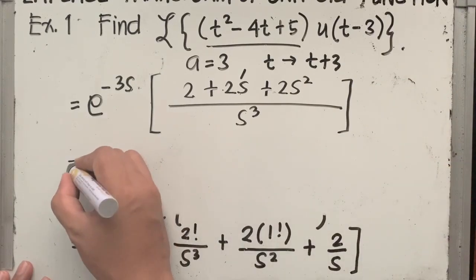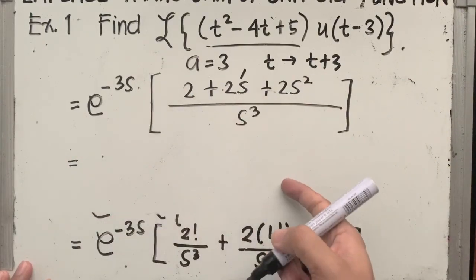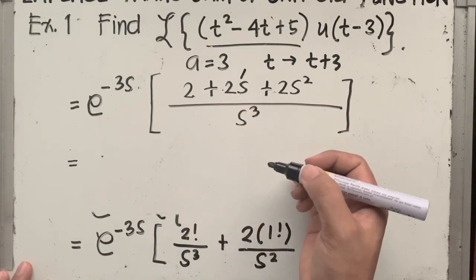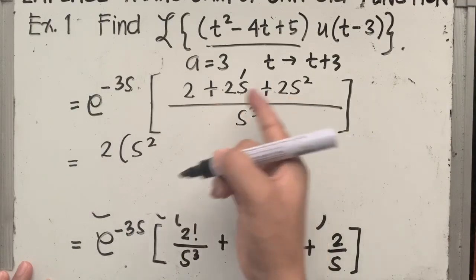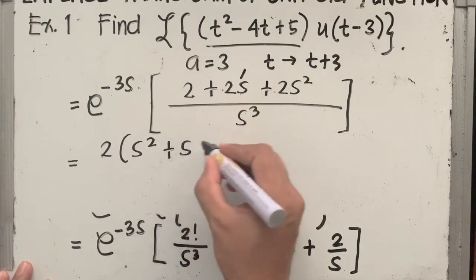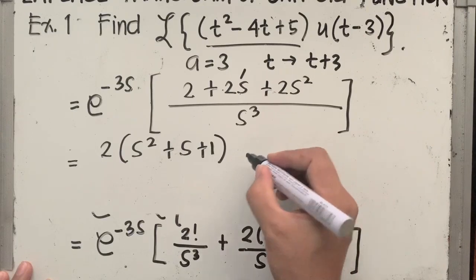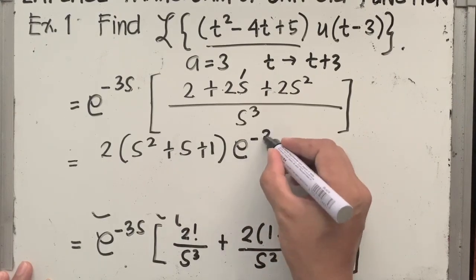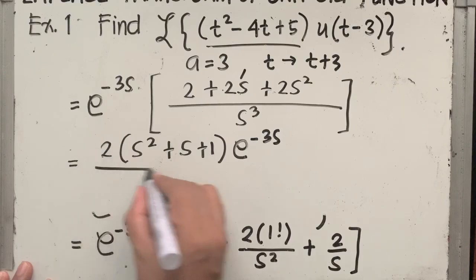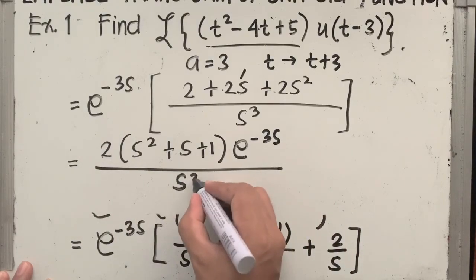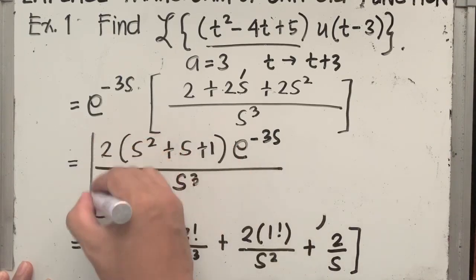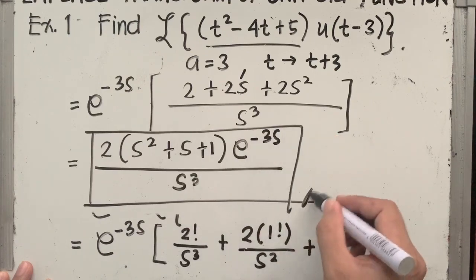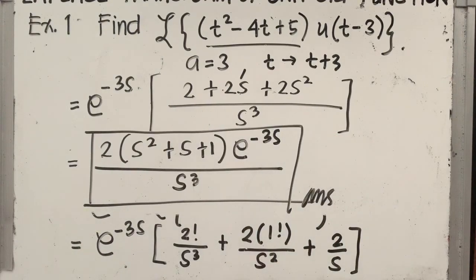Notice that in the resulting rational expression, there is a common factor — you can factor out 2. Arranging s terms according to highest degree, the answer is 2 times s squared plus s plus 1 times e raised to minus 3s, all over s cubed as the denominator. This is your final answer for the Laplace transform of the given unit step function.